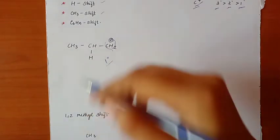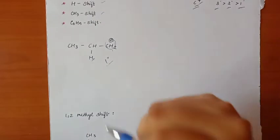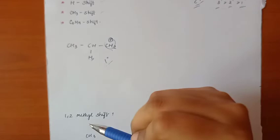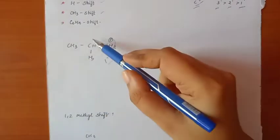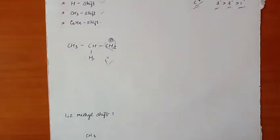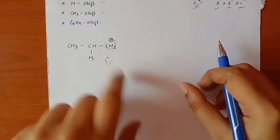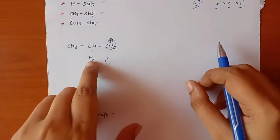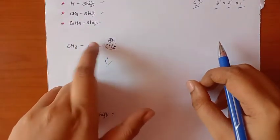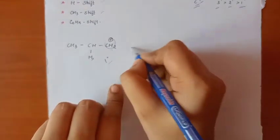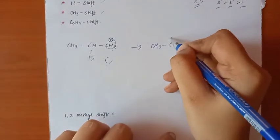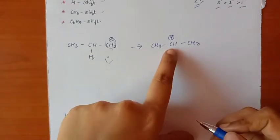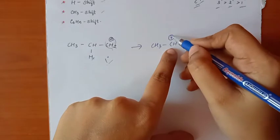Now what do we do? We have a hydrogen on the adjacent carbon. The 1° carbocation wants to become a 2° or 3° carbocation. So the hydrogen from the 2° carbon shifts over, and now we have a 2° carbocation. The 2° carbocation is more stable.